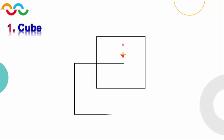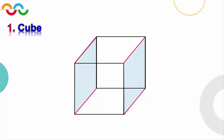Then we connect all two corresponding vertices of the two squares. Finally we draw the cube, and we find that it has each two opposite faces are congruent. Now let's draw our second solid, which is a cuboid.